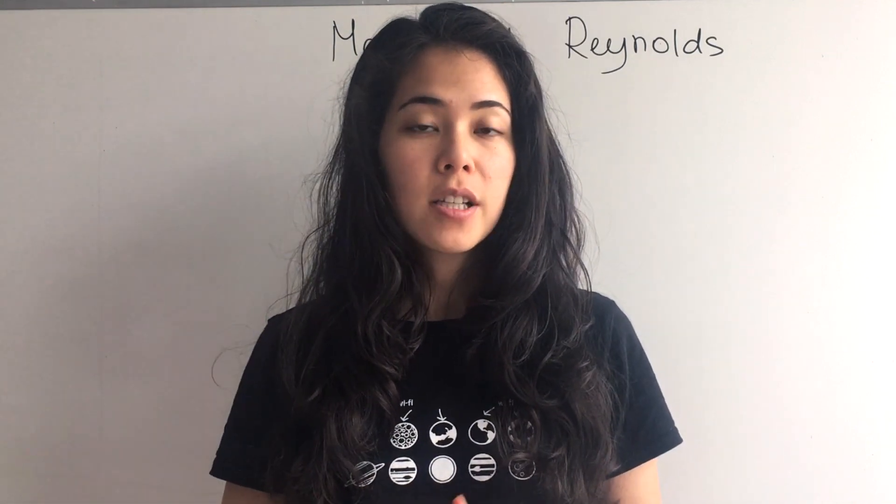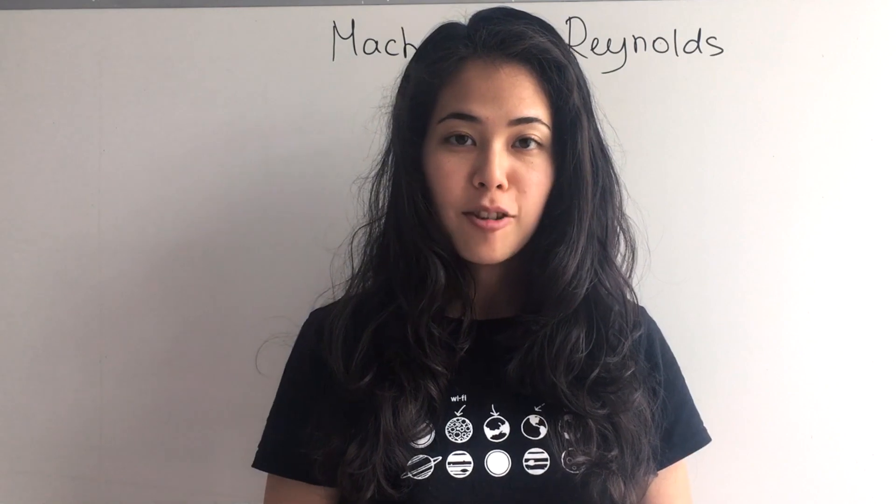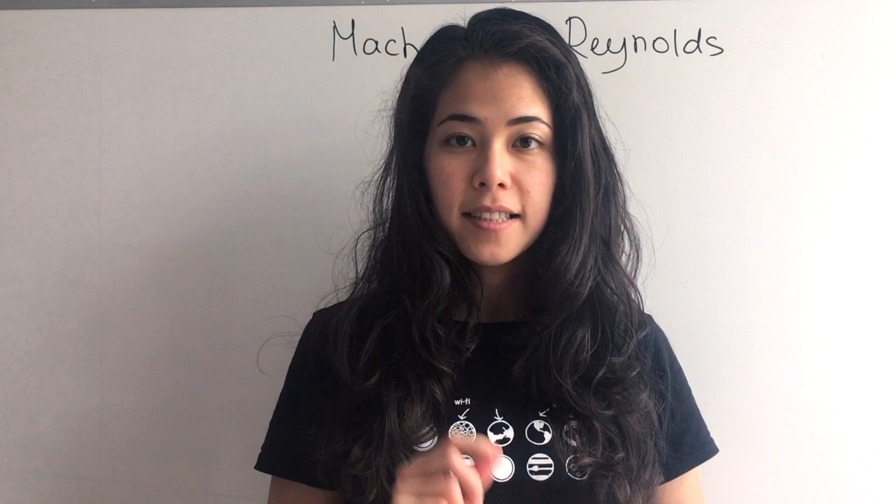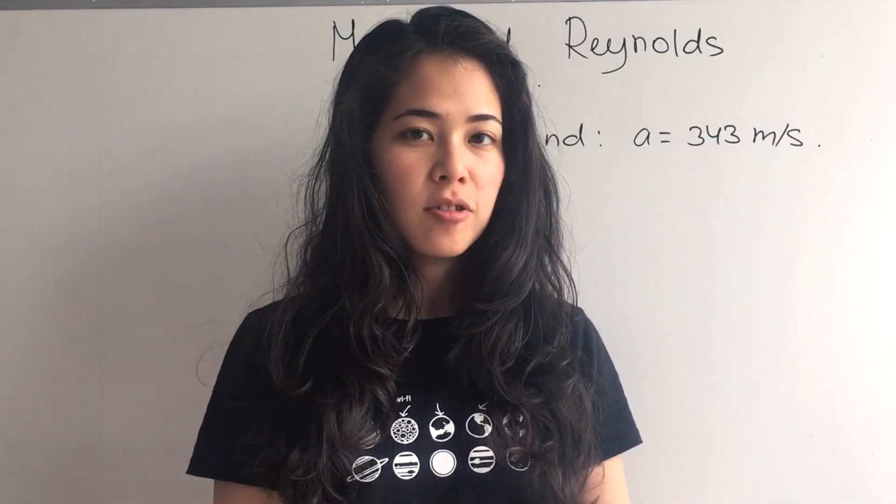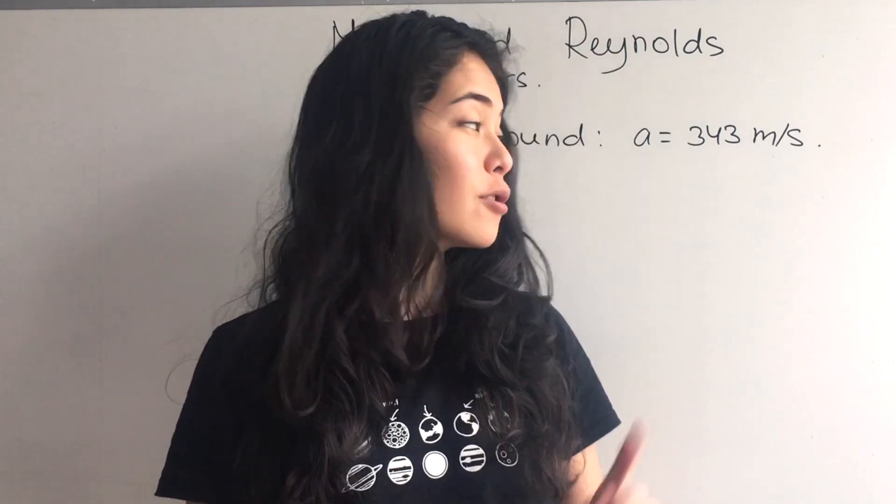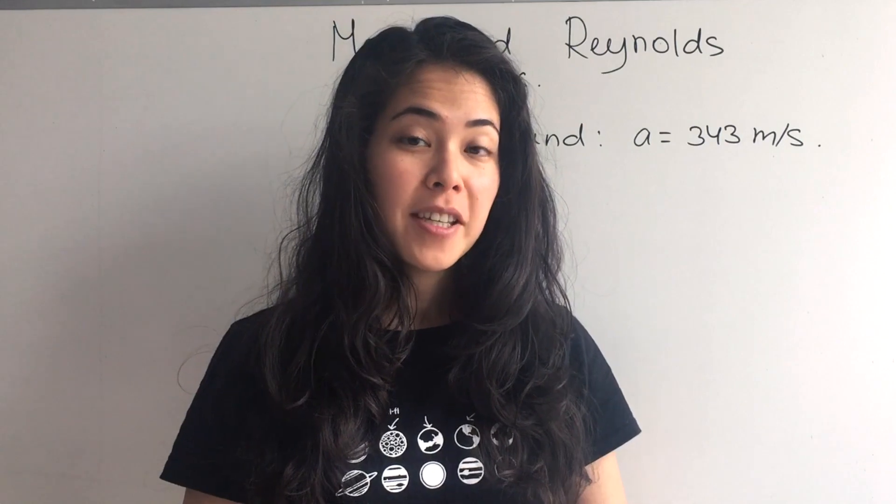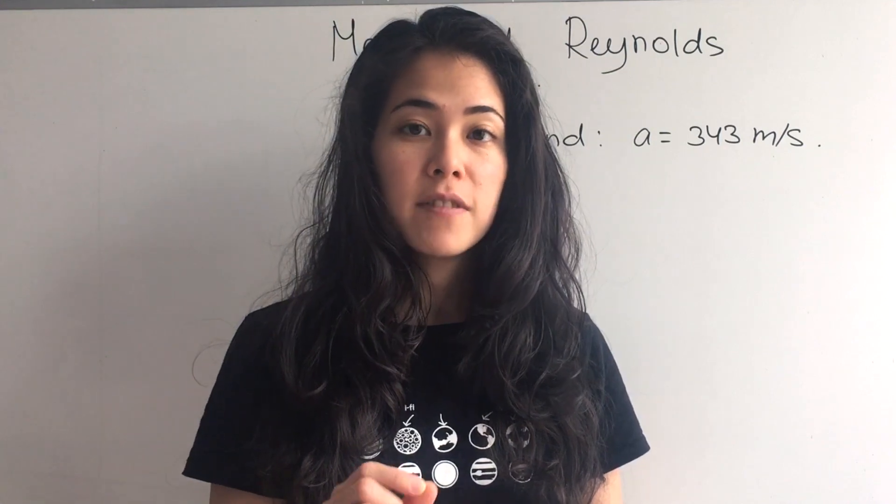It turns out it's the speed of sound. If you don't remember, speed of sound is 343 meters per second and it's denoted by letter a. So what would be the way to figure out how fast 200 meters per second is compared to the speed of sound? Well, that will be the Mach number.